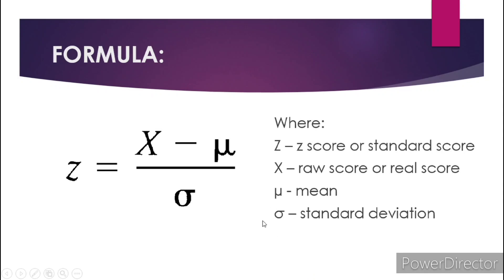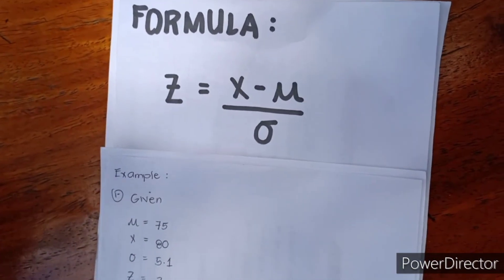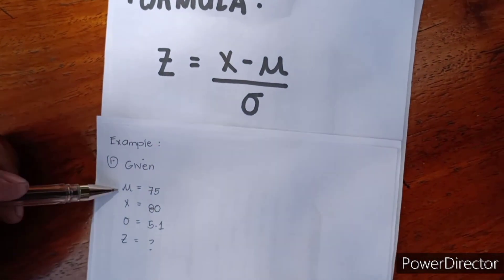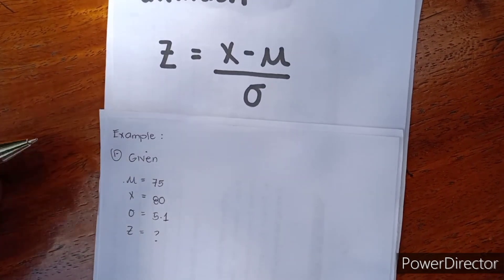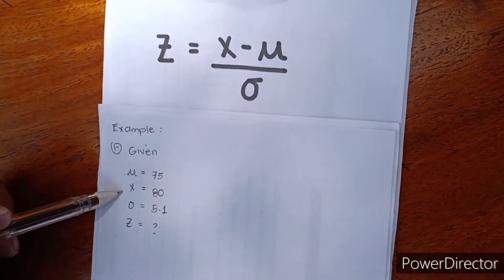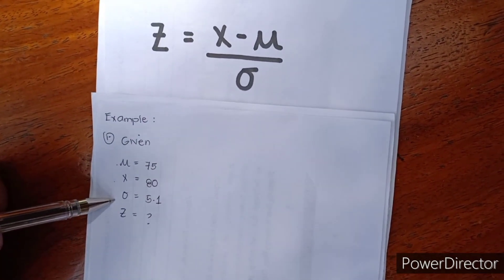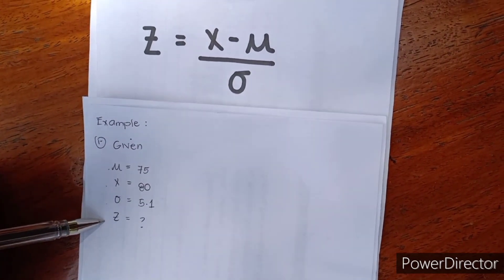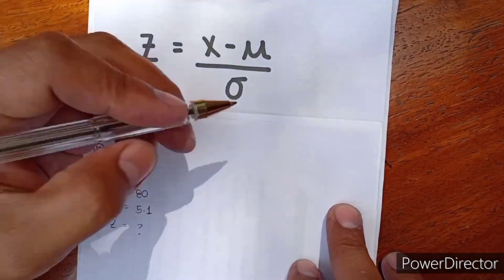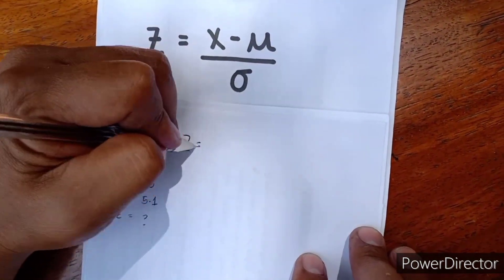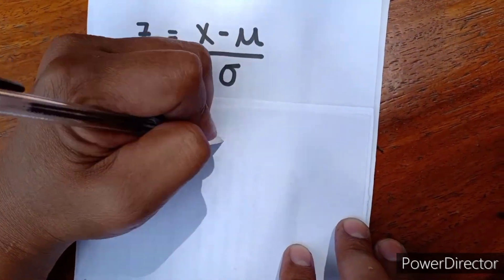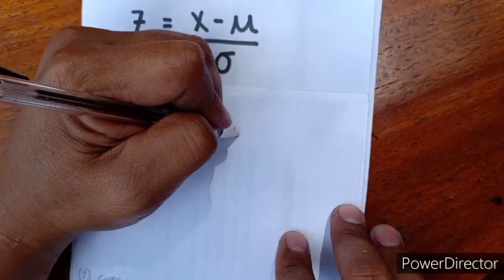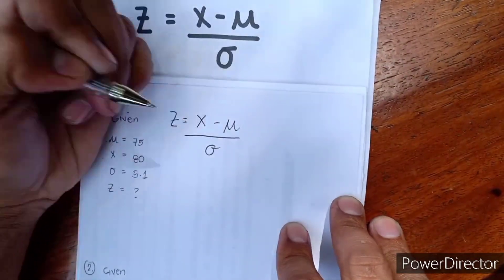Let's now proceed to our first example. What if the given is: mean is equal to 75, real score is 80, standard deviation is equal to 5.1 — find Z. We know that Z is equal to raw score minus mean, all over standard deviation.